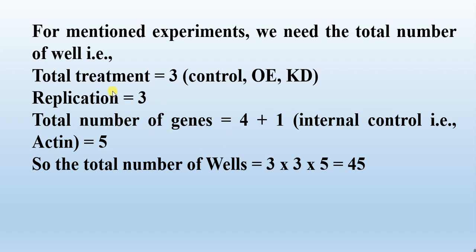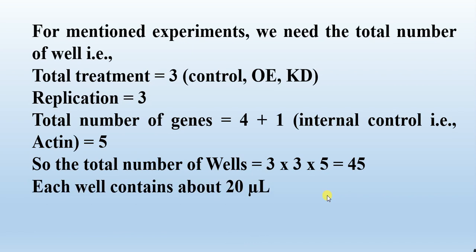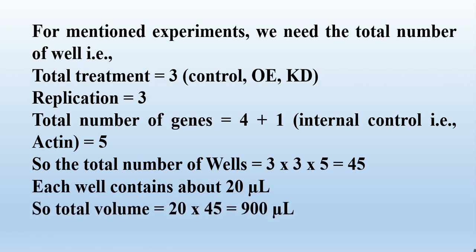The total number of wells is calculated by multiplying the number of treated samples, replications, and number of genes: 3 × 3 × 5 = 45 wells. Each well contains about 20 microliters of your mixture, so the total volume will be 20 × 45 = 900 microliters that you need to prepare.